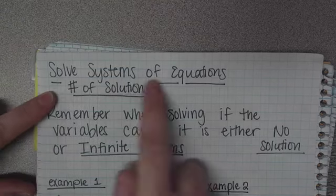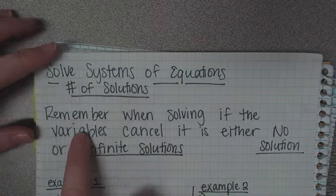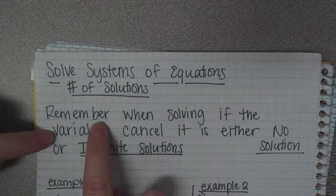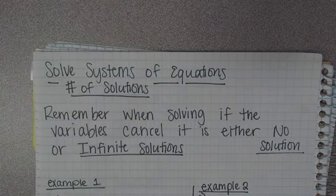We are going to solve systems of equations and number of solutions. Remember, when we were solving, if the variables cancel, it's either going to be no solution or infinite.